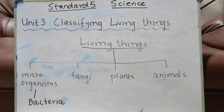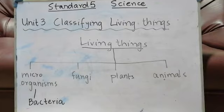Bacteria that live on animal waste, in soil, and on rotten food are very harmful. If people eat them, they get sick. However, some bacteria are very useful, especially the bacteria living in our stomach and intestines — our digestive system — which help our food to digest.